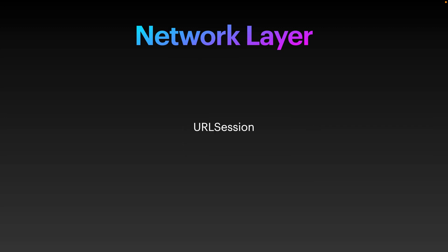The final layer is the network layer, which uses URLSession to get data. You can also use Alamofire or any other networking library. The network layer is responsible for connecting with a web API or JSON API, going to the server, getting the data, and then giving it to the DTO. The DTO then passes the data to either the domain model layer or the view model.